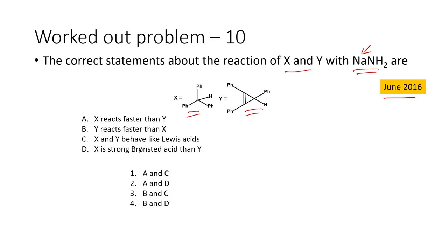We have two different intermediates that will be formed after abstraction of the proton. The first statement is X will react faster than Y. The second is Y will react faster than X. The third is X and Y behave like Lewis acids. The fourth is X is a stronger Brønsted acid than Y. The answer is one of four combinations: A and C, A and D, B and C, or B and D.